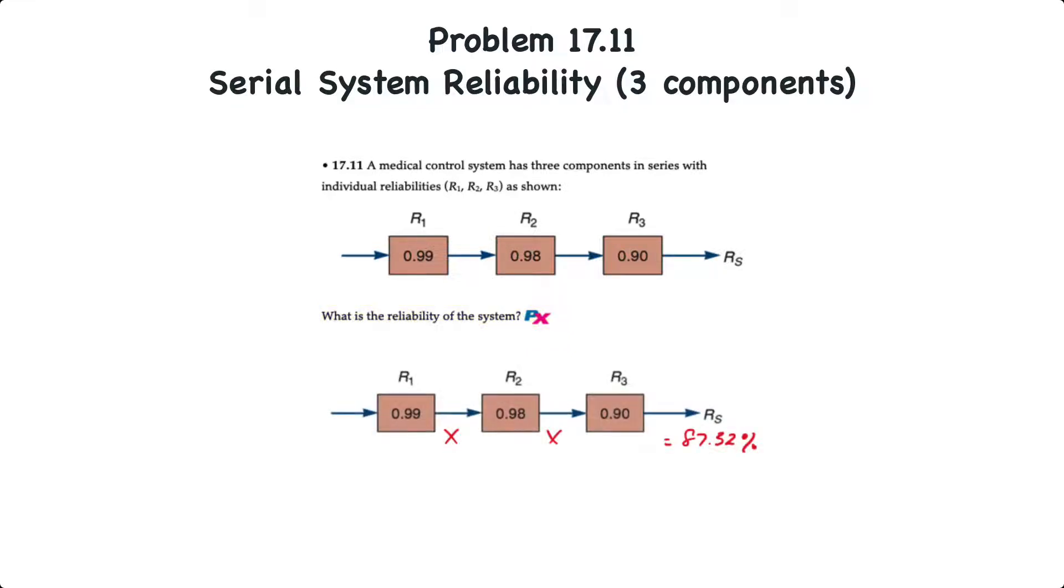Well, all we have to do with systems in series is simply multiply all the reliabilities of all the components. So 0.99 times 0.98 times 0.90 is 87.32% reliability.